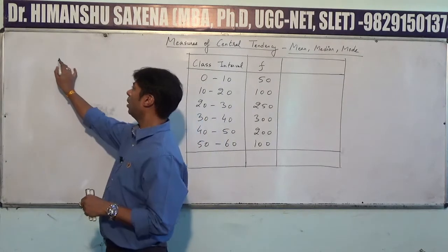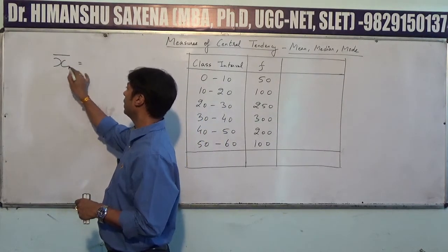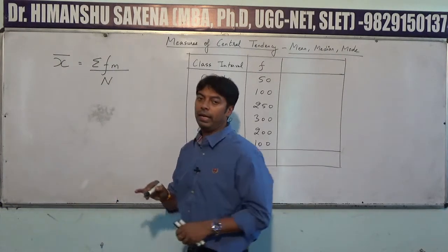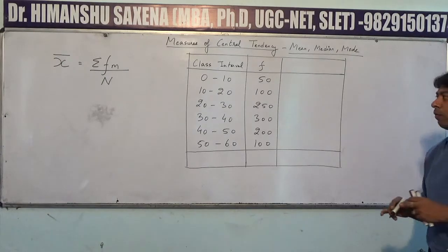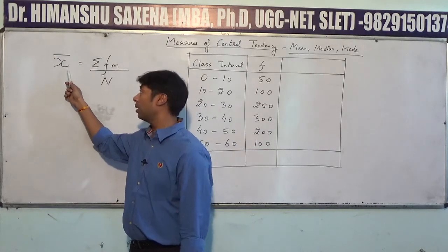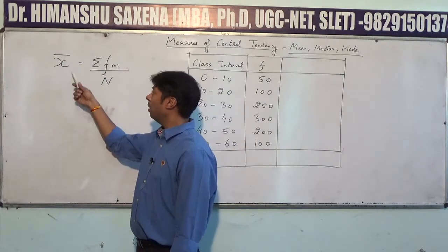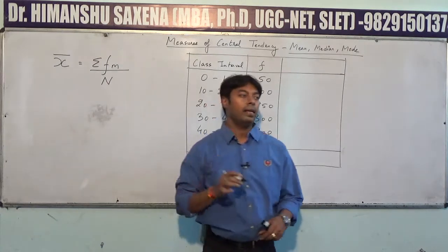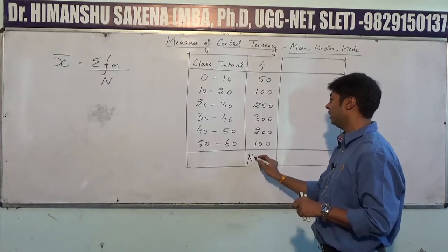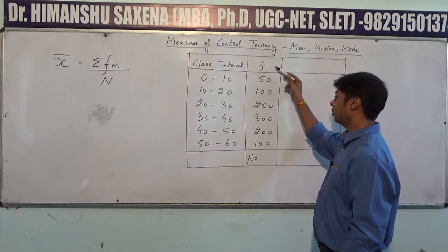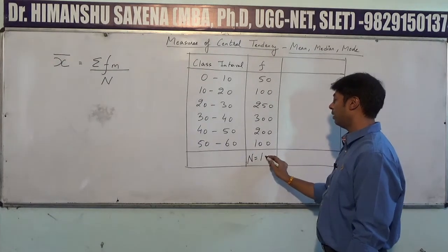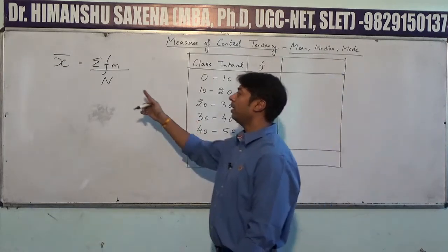Remember the formula to calculate the arithmetic mean — it is summation fm upon n. The formula for arithmetic mean, denoted by x-bar, is summation fm divided by n, where n stands for the total of the frequency. Let us total the frequency values: the total is 1000, so n is 1000.